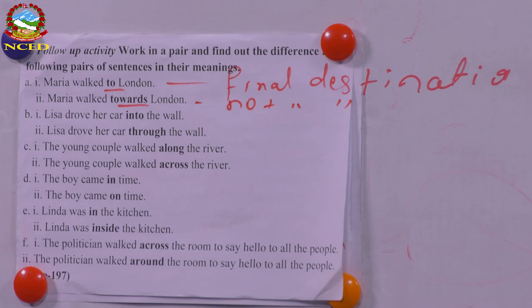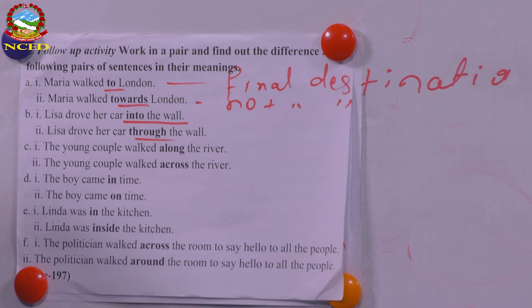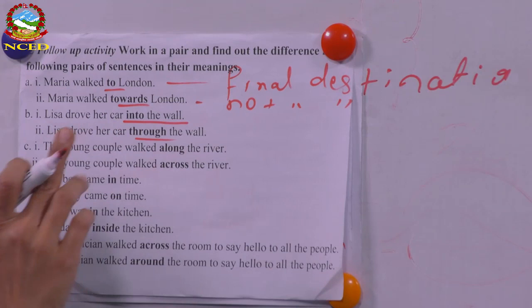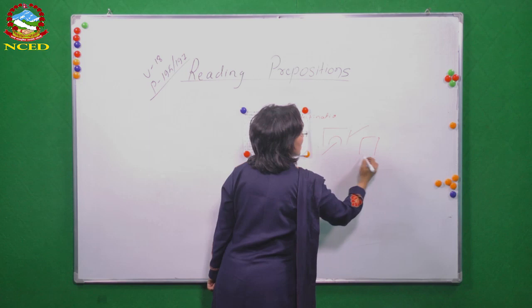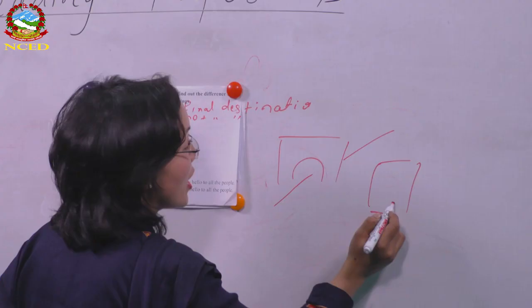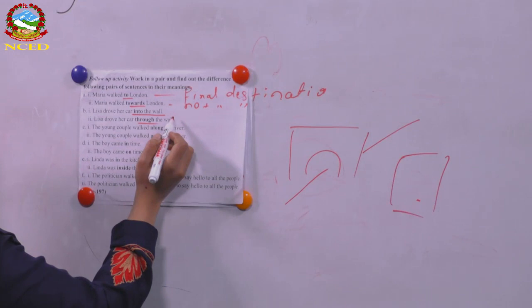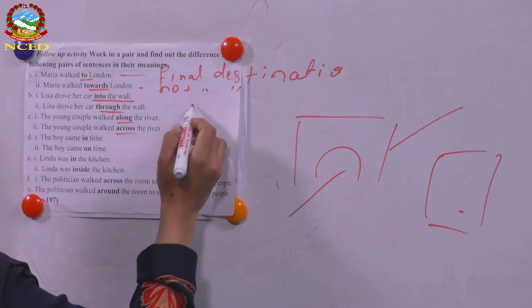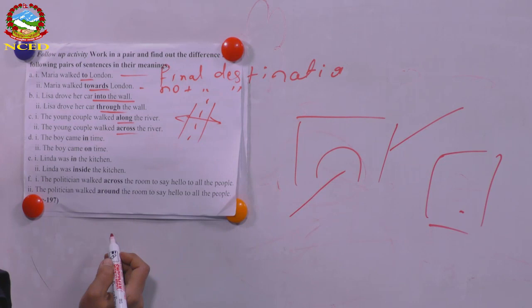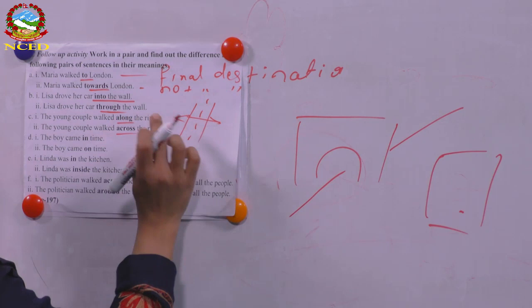Lisa drove her car into the wall versus through the wall. 'Into the wall' means her car collided with and was damaged by the wall — she met with an accident. 'Through the wall' means there was some space and the car went through the wall. Also: walked along the river versus swam across the river — 'along' means moving in a straight line beside the river; 'across' means going from one side to the other side.